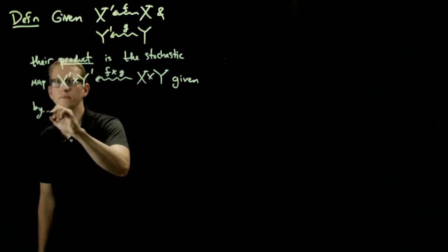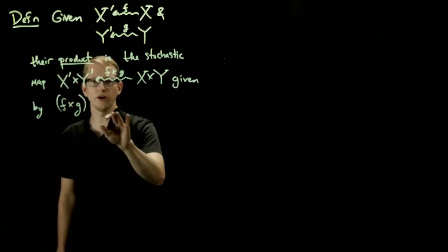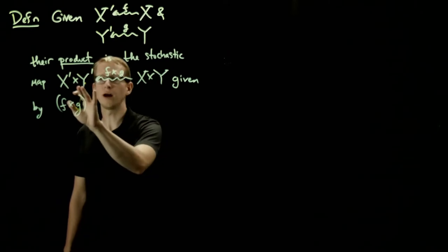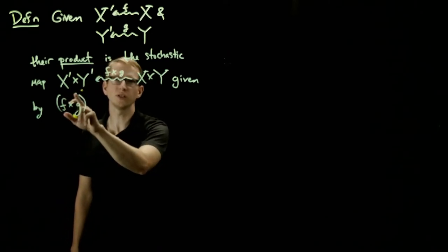So it's determined by the formula F cross G. Now remember what our notation is. For each element in the domain, we get a probability distribution on the codomain, and that probability distribution is determined by what it does to points because we're working with finite sets.